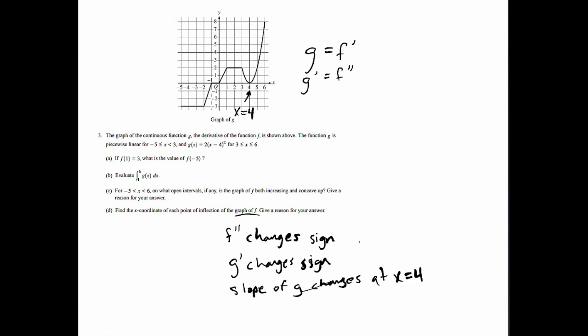And so I would write x equals four. F has an inflection point. Let's write out the whole thing: F has inflection point at x equals four since F double prime changes sign. Or you could say F double prime goes from negative to positive. And that's it.